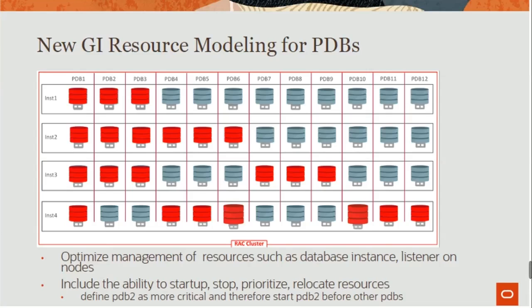New GA resource modeling for PDB: optimize management of resources such as database instances, sessions, or nodes. Includes the ability to start up, stop, re-locate resources. You can define PDB2 as more critical and therefore start PDB2 before other PDBs.